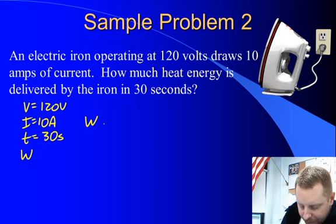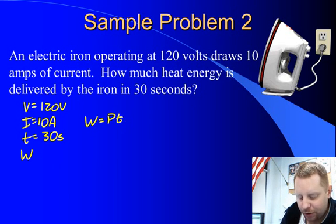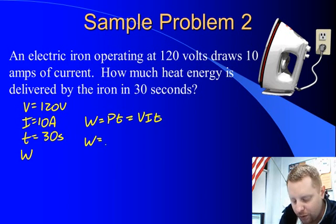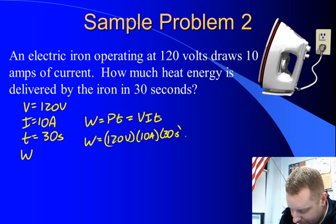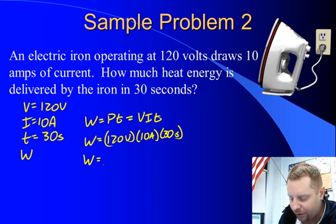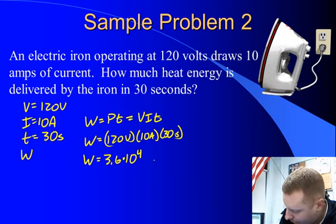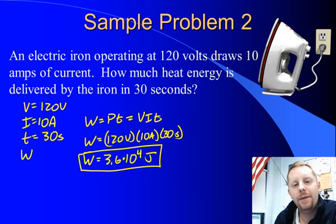Well work, if you recall, is power times time and power is current times voltage. So that's going to be V, I, T. Or when I substitute in with units, 120 volts times 10 amps times 30 seconds. Or I come up with a total amount of energy of 3.6 times 10 to the fourth joules. Just another manipulation of our basic equations for power and energy.